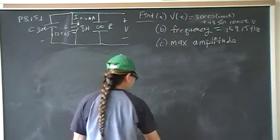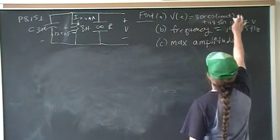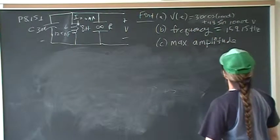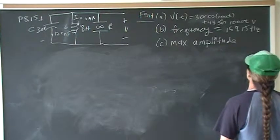Maximum amplitude. So we have the voltage function is 30 cosine 1000t and this is 48 sine 1000t.